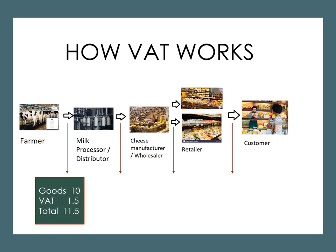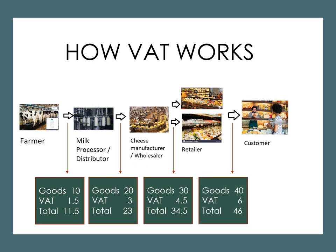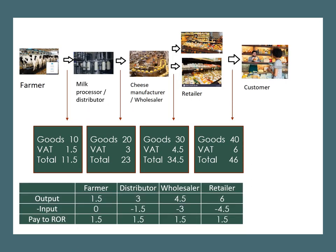VAT on sales is known as output VAT while VAT on purchases is known as input VAT. The output VAT for one company becomes the input VAT for the next company in the supply chain. You will notice that at the end of the supply chain it is the final consumer that pays the cost of the VAT. The final consumer pays $6 in VAT, which is equivalent to what the government receives. At each stage in the supply chain, input VAT is deducted from output VAT to compute the amount that is payable to the government.